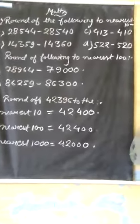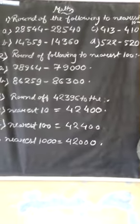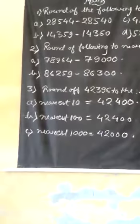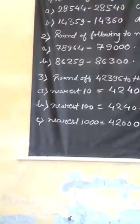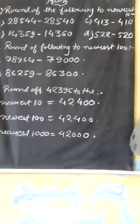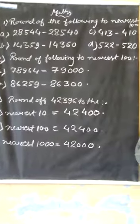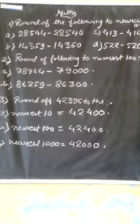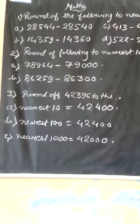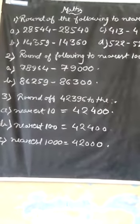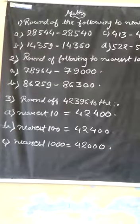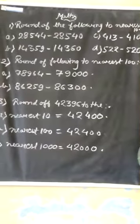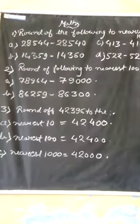Round off to the nearest hundred. We ignore the ones and tens place, which will be 0. And if it is half or more, then we add 1 at the hundreds place. For example, 78,964 will be 79,000.